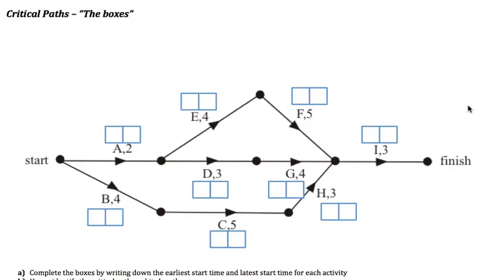Hi guys, here we're going to go through an example of using the boxes to figure out a critical path. We've got a network here with a bunch of activities that need to get done. You can see we've already put double boxes next to each activity. This is a technique we might use to figure out the critical path, or often to figure out the slack time, earliest start time, or latest start time of a particular activity.